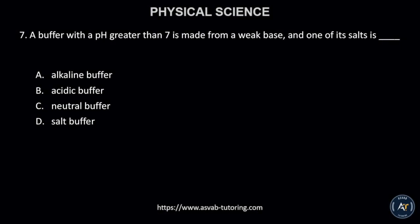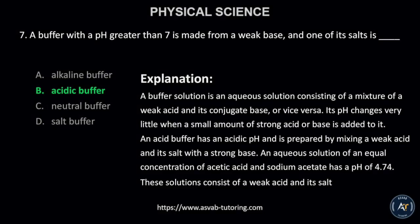Number 7. A buffer with a pH greater than 7 is made from a weak base, and one of its salts is A. Alkaline buffer, B. Acidic buffer, C. Neutral buffer, or D. Salt buffer. The correct answer is B. Acidic buffer.